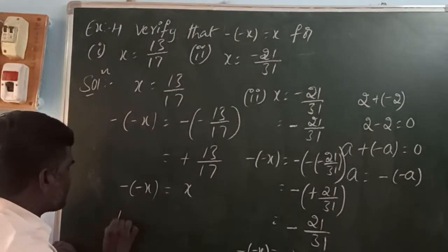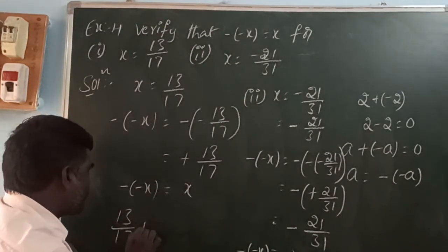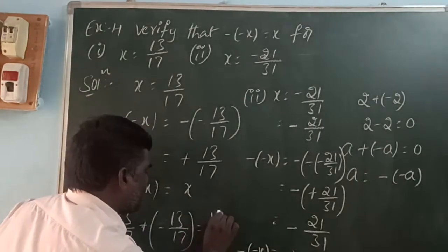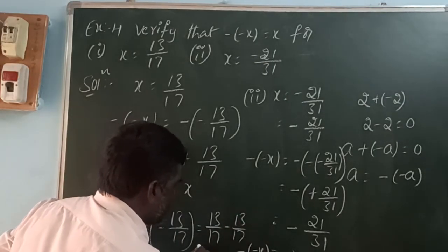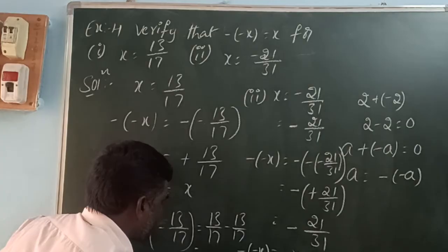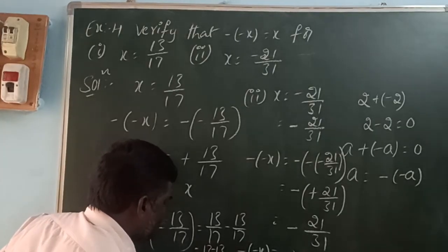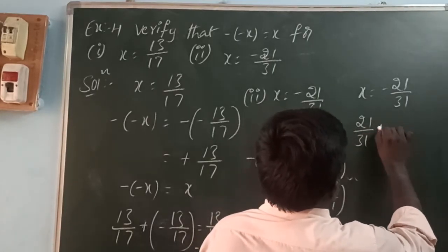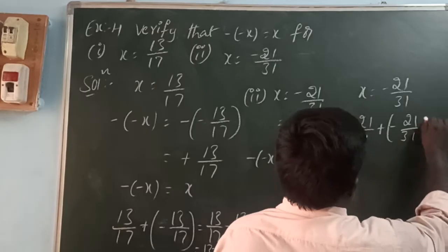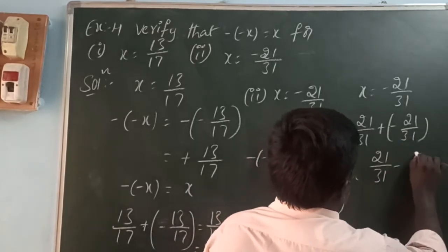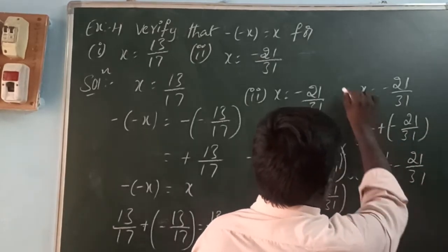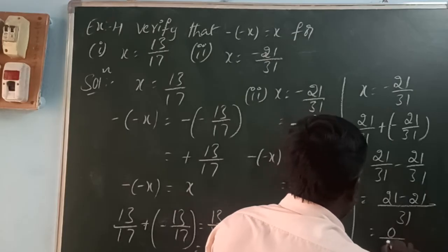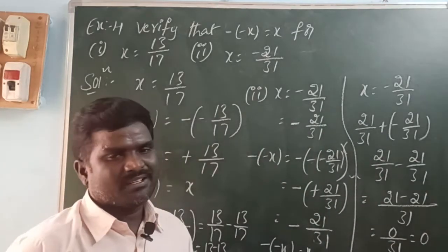Here, 13/17 is added to its additive inverse: 13/17 + (-13/17). Both are like fractions, so write the common denominator and add the numerators: 13 - 13 = 0/17 = 0. For x = -21/31: 21/31 is added to -21/31, giving 21 - 21 = 0/31 = 0.